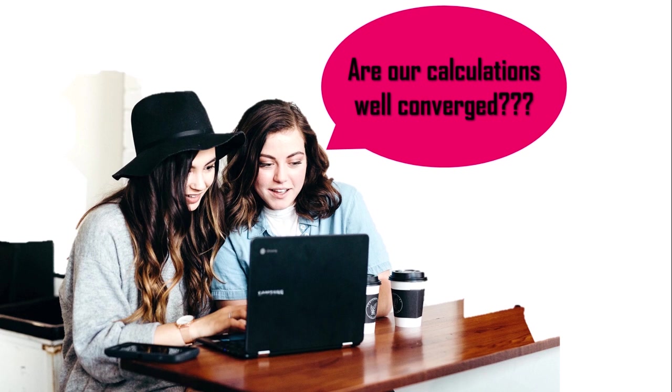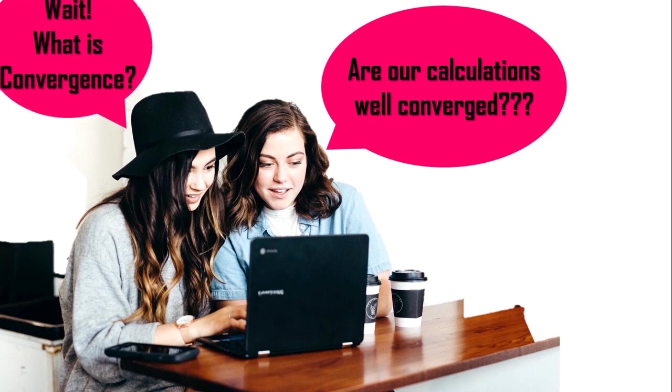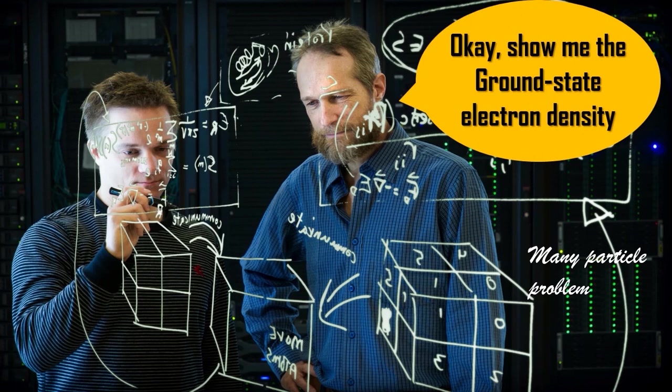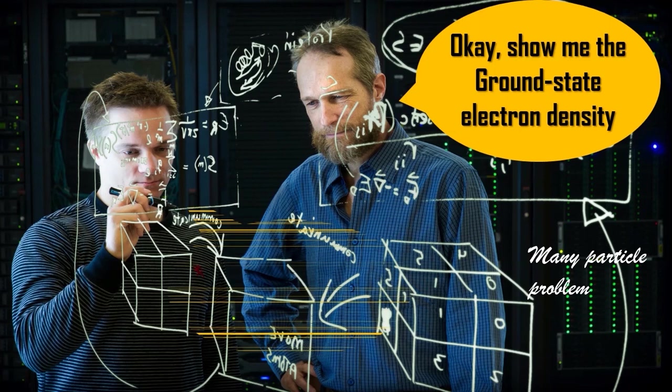Now, let's try to understand the term convergence in DFT. See, the ground state electron density of a configuration of atoms as approached by DFT is defined by the solution to a complicated set of mathematical equations. You know that. We have discussed this in lectures 1 to 4.